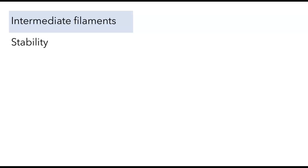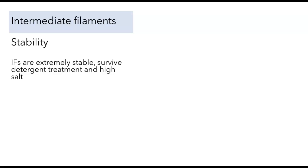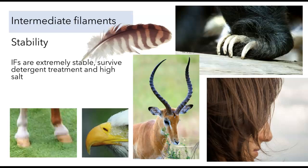Intermediate filaments are extremely stable. They can survive detergent treatment and high salt treatment — things that would normally break proteins apart and denature them. In fact, microtubules and microfilaments would depolymerize and be denatured by those kinds of treatments. Intermediate filaments may not be. We know this because intermediate filaments can survive after the cells that created them have died.